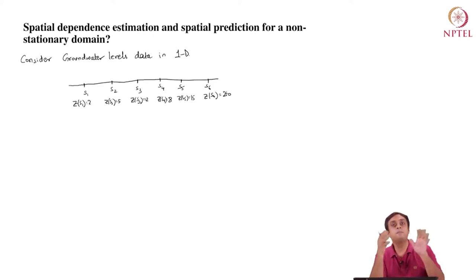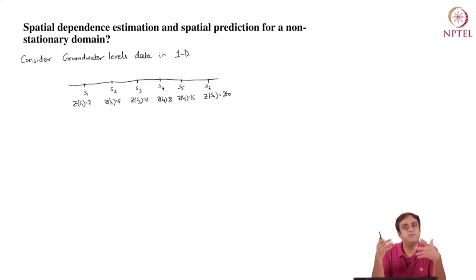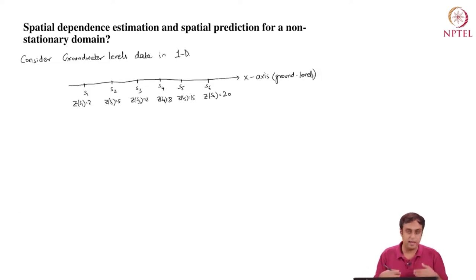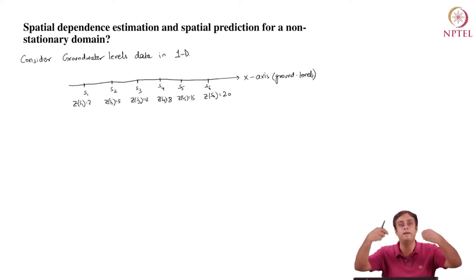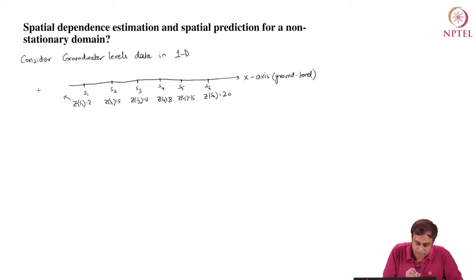Even before we do anything, it's pretty clear that as I'm moving along the real number line from location 1 to location 6, the depth of groundwater level is on average rising. We sense a rise in these values. The x-axis is my ground level — this is where I go in, dig a well, and figure out the depth. Z by itself represents groundwater depth.